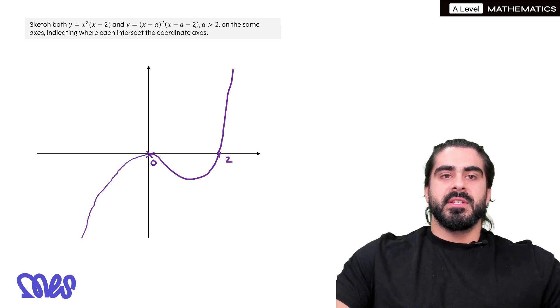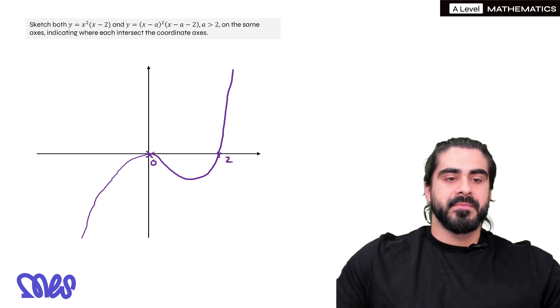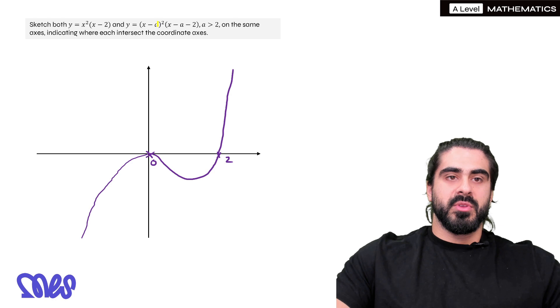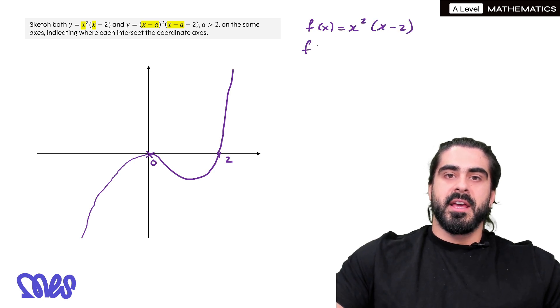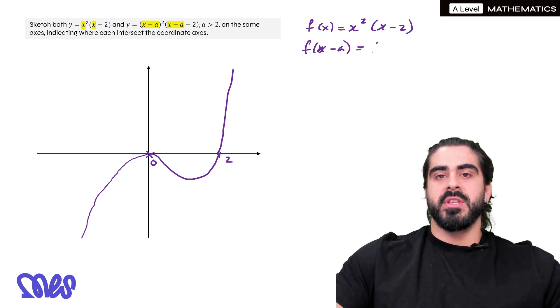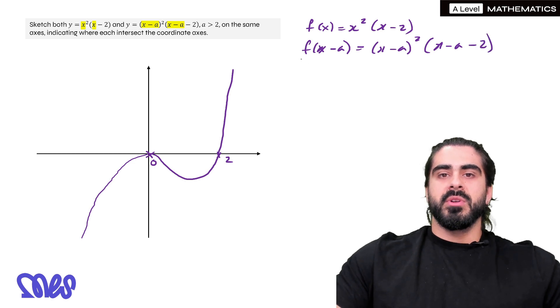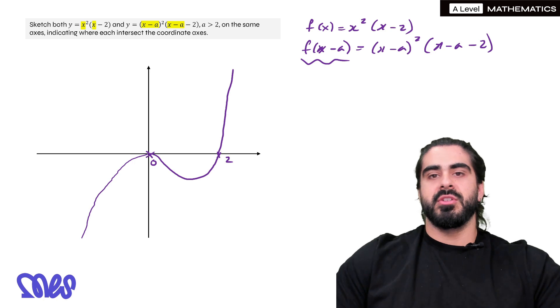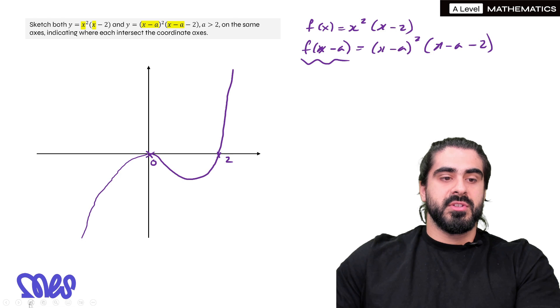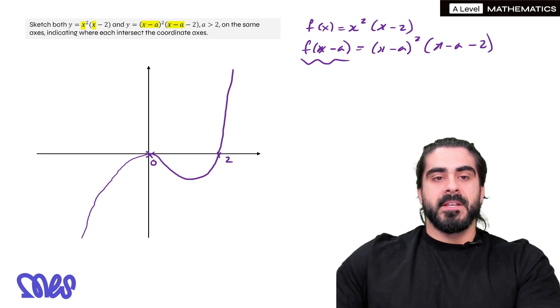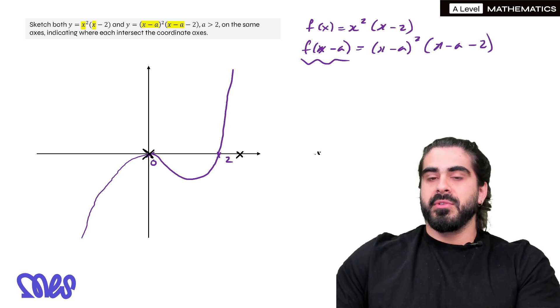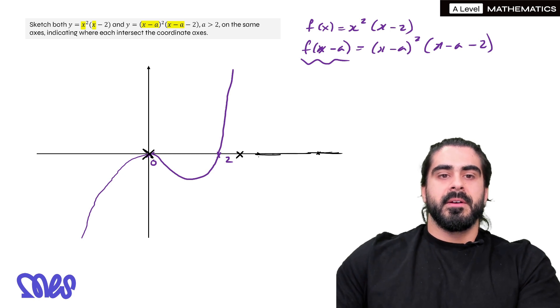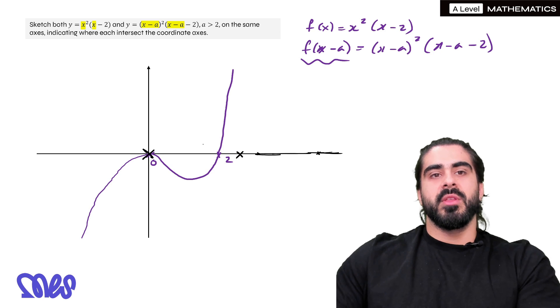Now the next thing we have to do is you need to observe this second graph and figure out how it relates to the first one, because it looks very similar. What you might notice is that what's happened is all the x's have been replaced with x-a. Yeah, all the x's have changed to x-a. So if we were to say if f(x) is x²(x-2), then f(x-a) would be change all the x's to x-a. Now what does f(x-a) mean? It means to shift the graph to the right by 2. In the question you can see a is bigger than 2, which is quite important because of when we put it side by side, this point here, when we move it to the right by a number more than 2, it's going to go here.